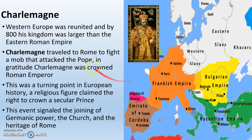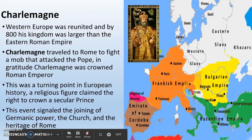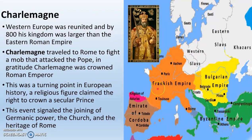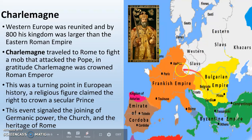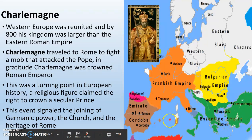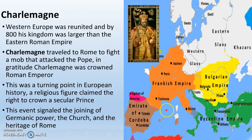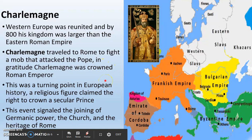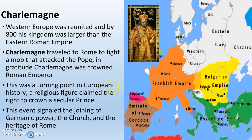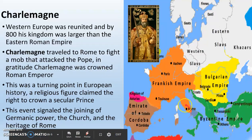Eventually, Clovis is going to die, and one of his descendants is going to be Charlemagne. Charlemagne is going to grow the Frankish Empire a lot — you can see its borders here. He actually gets very close to reuniting the Western Roman Empire, though he doesn't take Spain back. He even conquers the city of Rome and gets crowned with the weird title of Holy Roman Emperor — even though he wasn't actually the Roman Emperor — by the Pope, because he went and rescued the Pope after the Pope was attacked by a mob.